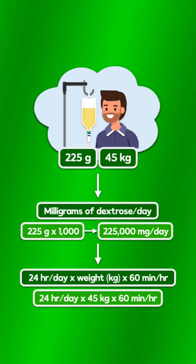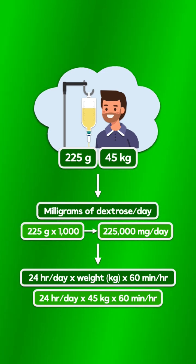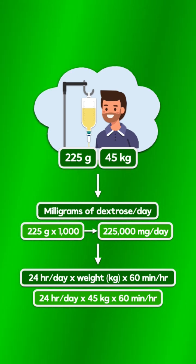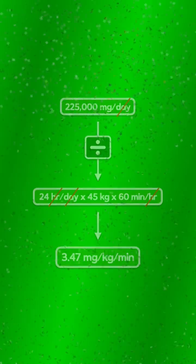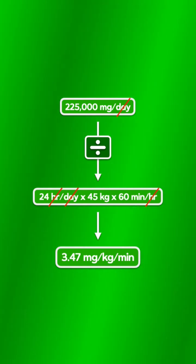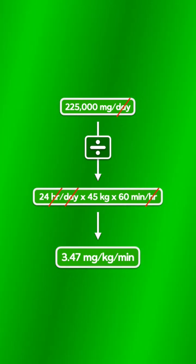If you had a 45 kg patient receiving 225 g of dextrose per day, you'd multiply 225 by 1,000 to get the mg, then divide that number by 24 times 45 times 60, cancel out the units, and you end up with a glucose infusion rate of 3.47 mg per kg per minute.